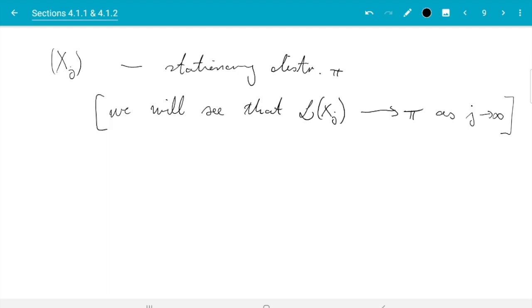And in the book, there are two separate proofs for that statement, one for the continuous case and one for the discrete case. Here, I will just go through the proof for the discrete case, which is in section 4.1.2. And I'll leave it to you to read section 4.1.1, which gives a proof for the continuous case.